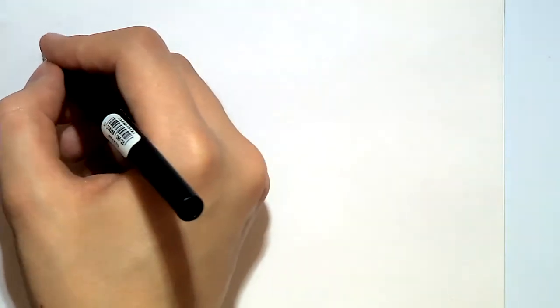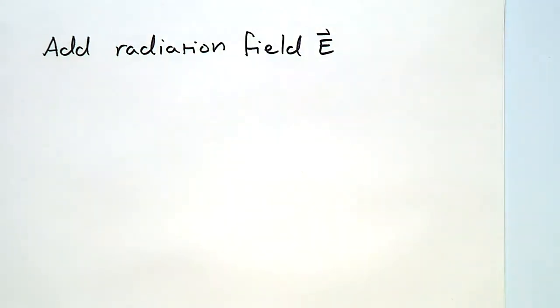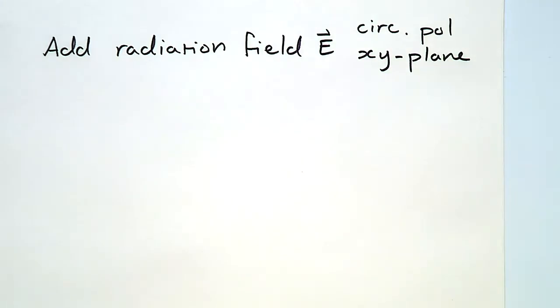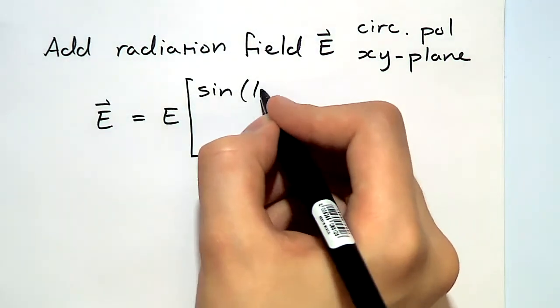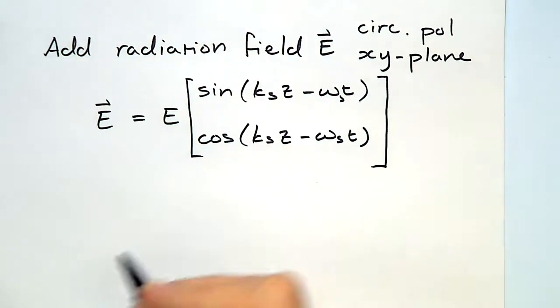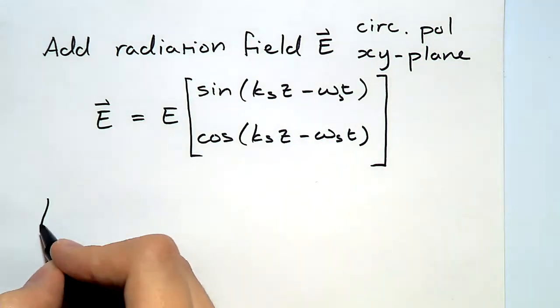Next, we should add the radiation field E into the cavity, which we're assuming to be circularly polarized in the x-y plane. So it can again be written as trigonometric functions in the x and the y directions, this time with time dependence, of course, because it's an oscillating electromagnetic field.